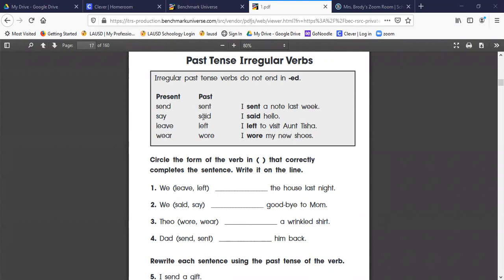These are starting to get a little more complicated. They're not just changing a single vowel, there's a lot of the words changing, but they are irregular and they do not have 'ed' at the end. So we are choosing on this page one of the words in the parentheses to finish the sentence and then we're going to write it. So we're going to circle and write. Number one: we leave or left the house last night. That's happening in the past, last night, so we're going to say 'left'.